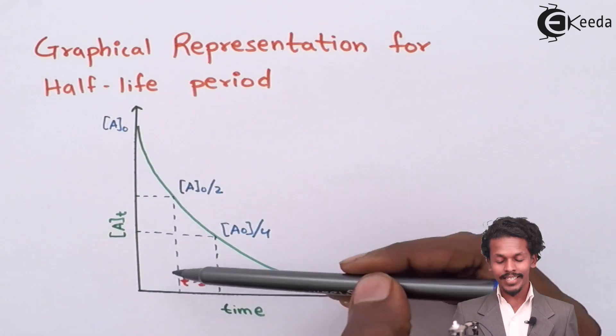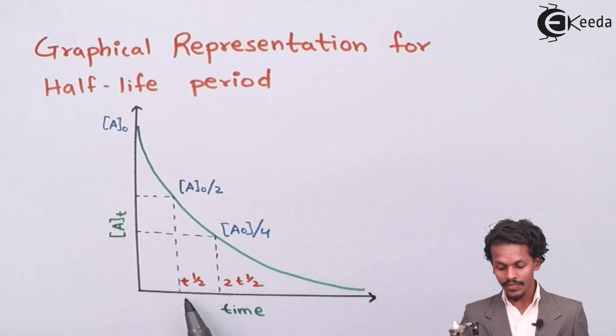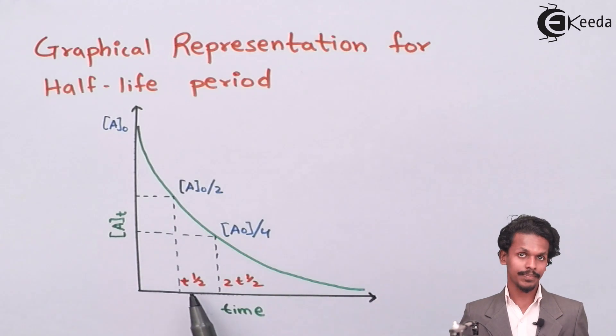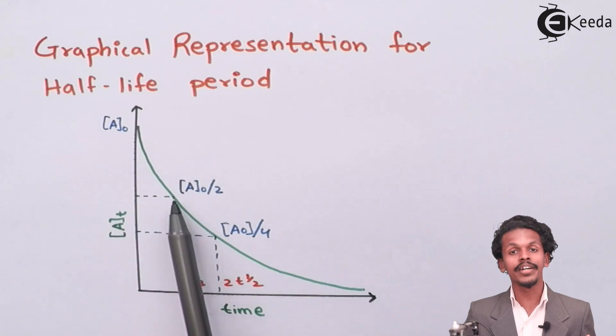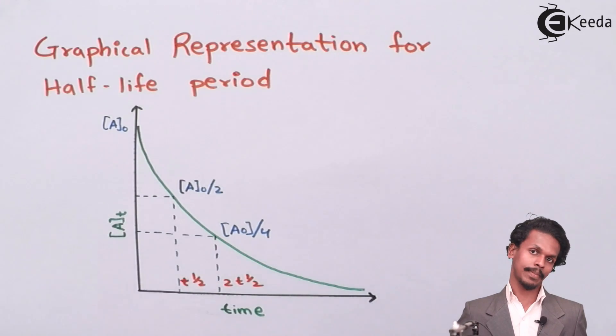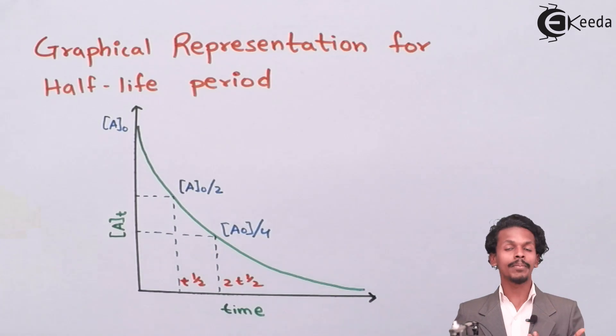So the time where the concentration we observe is half of the initial is known as half-life. So in this case, you can observe t half here. So this is the time where the initial concentration has been turned into its half.